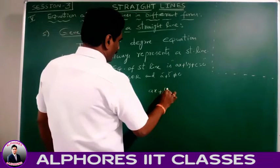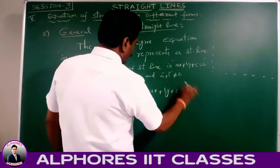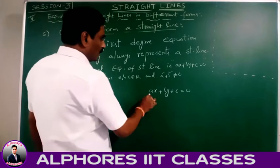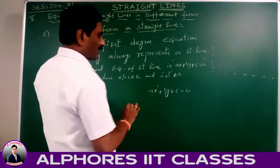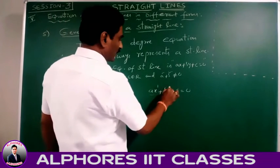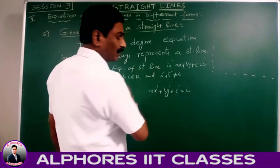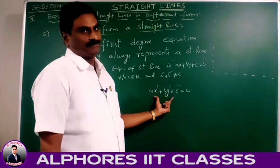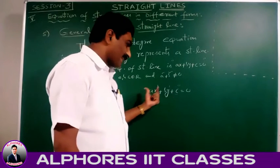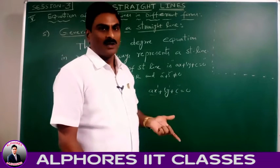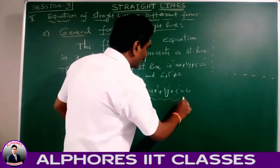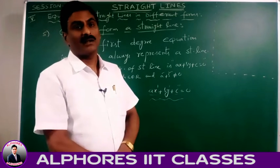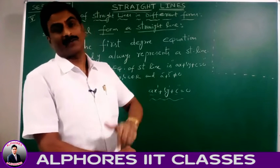Please observe this equation ax + by + c = 0. The degree of x is 1, the degree of y is 1, and c is the constant term with degree 0. Finally, the degree of this expression is 1. So it is the first degree equation in x and y, and it is said to be the general equation or standard equation of the straight line.